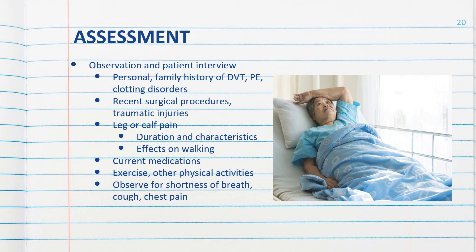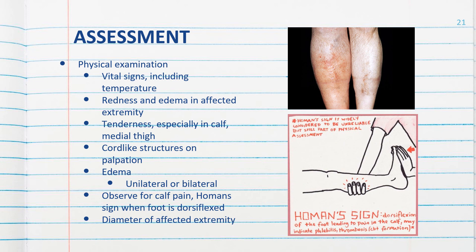Review their current medications. Discuss exercise and regular physical activities. Observe for shortness of breath, cough, or chest pain, as these may be signs that an embolus has moved to the lungs. For the physical examination, assess vital signs including temperature. Examine the affected extremity for redness and warmth. Assess for tenderness particularly in the calf and medial thigh, and palpate the extremity noting any cord-like structures.